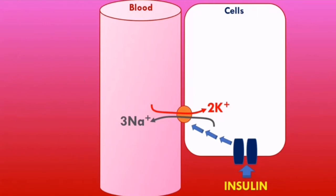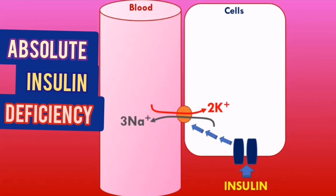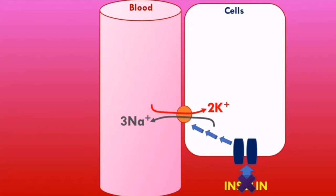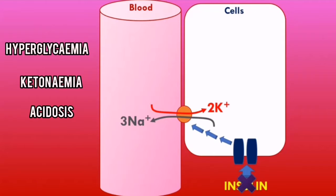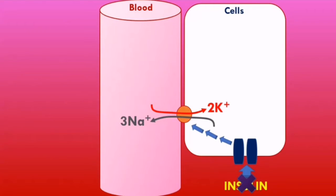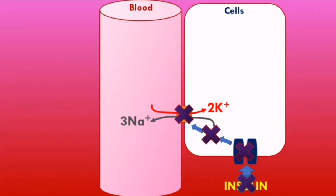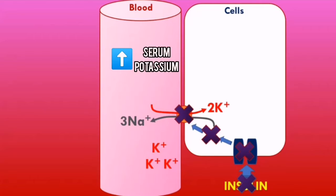Now let's think about DKA. One of the things that characterizes DKA is an absolute insulin deficiency in the body. This leads to the biochemical triad of hyperglycemia, ketonemia, and acidosis. With no insulin to bind to receptors on cells, the intracellular signaling pathway will not take place, and insulin will not be able to exert its effects on the sodium-potassium ATPase pumps. This means potassium will stay and build up in the blood, increasing the serum potassium levels and the risk of hyperkalemia.